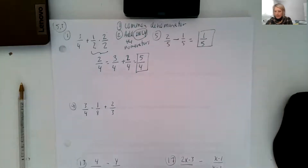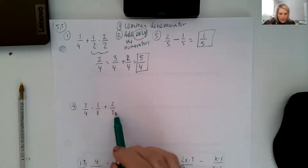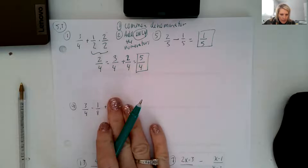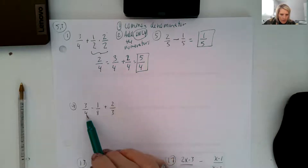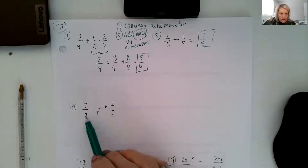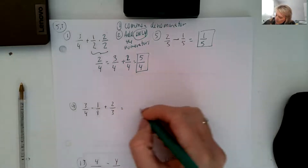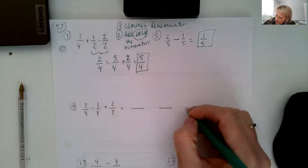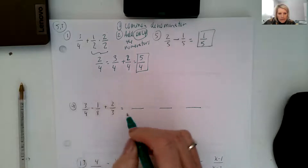Let's look at number nine. We have denominators of four, eight, and three. If it was just the four and eight, eight is a multiple of four, but we have three as well. So we have to find a denominator that works for all three. It's probably easiest to use twenty-four — twenty-four is eight times three, and four times six also gets to twenty-four.